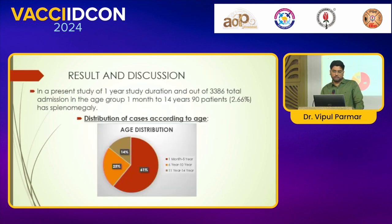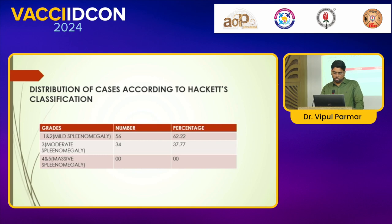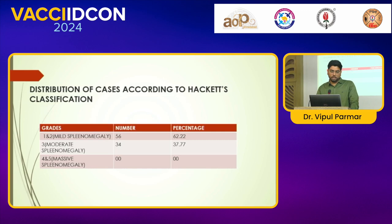Results: In the present study, over a one-year study duration, out of 3,386 total admissions in the age group 1 month to 14 years, 90 patients had splenomegaly. Distribution of cases according to classification showed most common grade 1 and 2 splenomegaly at 62 percentage.